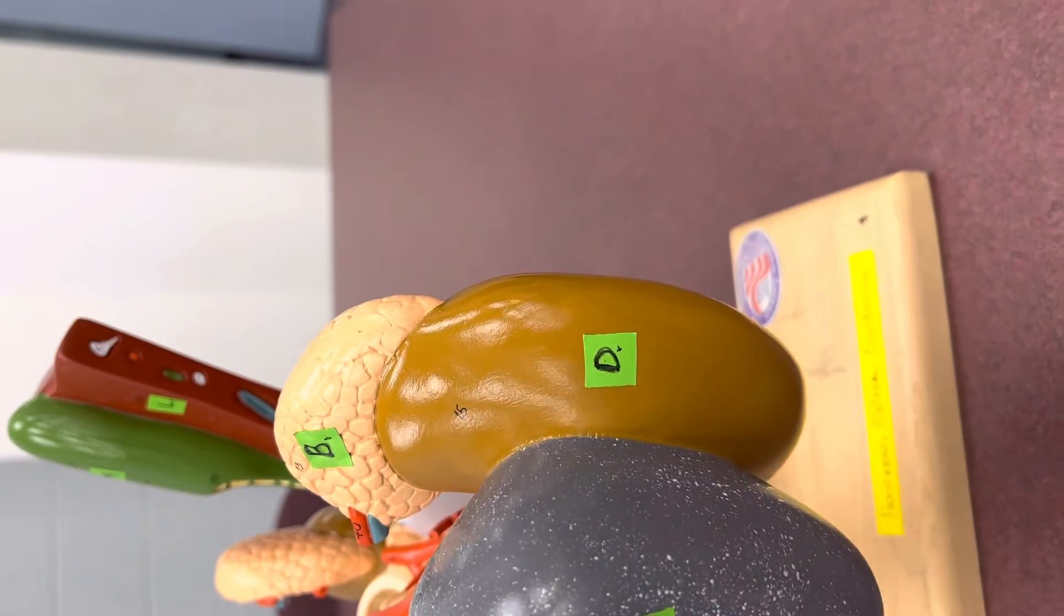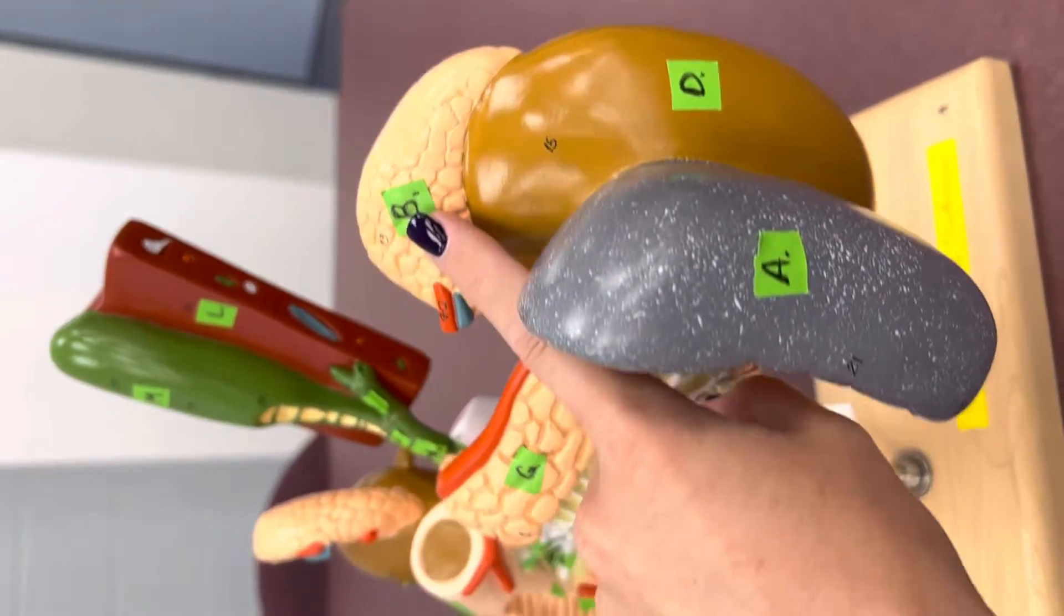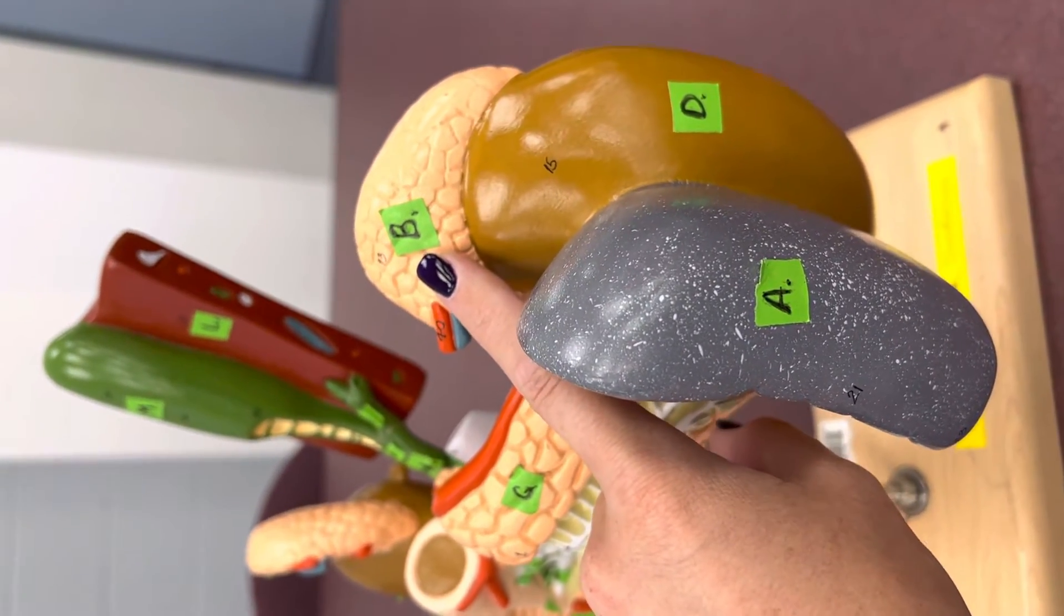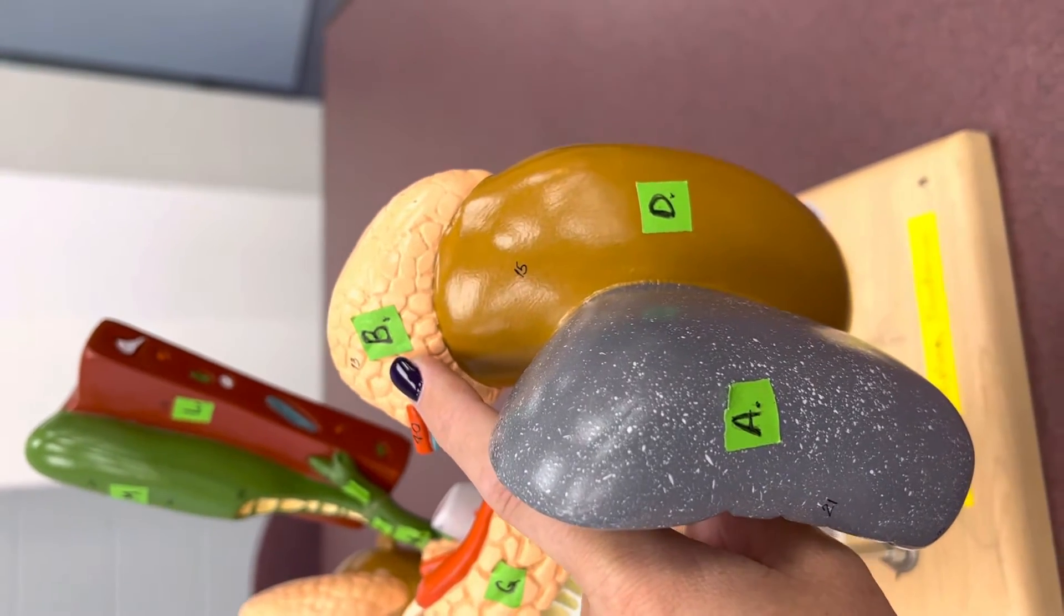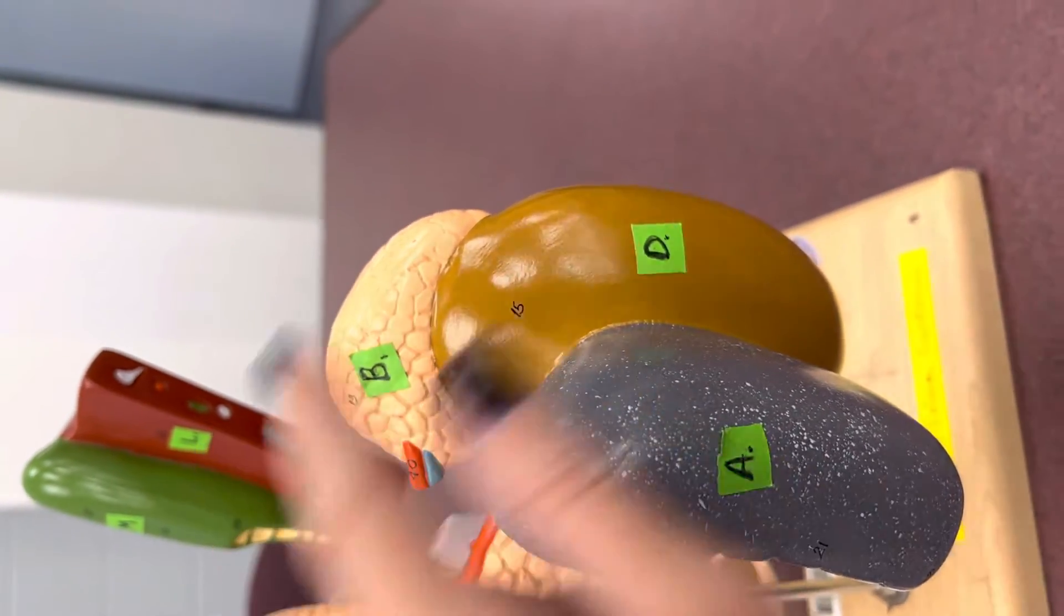Behind the spleen, we have the kidney. On top of the kidney, staying in order, is the adrenal gland, also known as the suprarenal gland, because it sits on top of the kidney.